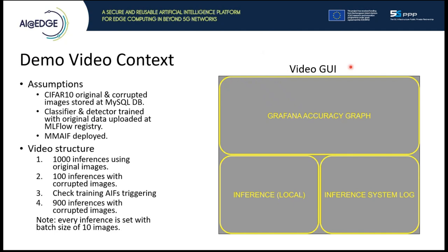Here in the right part of this slide, we can see how the screen will be structured. At the bottom left, we will see the inference — a Python script that will be executed locally. This will gather the images stored at the MySQL DB and then send them to the model and the detector to make inference. In the bottom right, we will see the inference system block, which will be useful to see if the detector has triggered a case of drift or not. And at the top, we will see the accuracy graph showing the evolution of the model during the whole video.